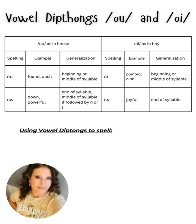The next spelling is O-W. Examples are 'down' and 'powerful'. This spelling happens at the end of a syllable, or in the middle of a syllable if followed by an N or an L.